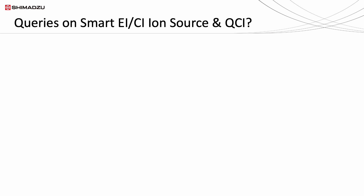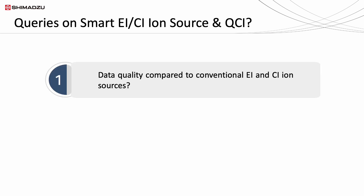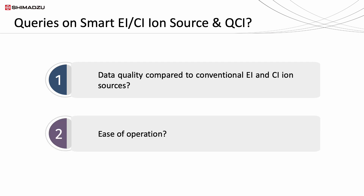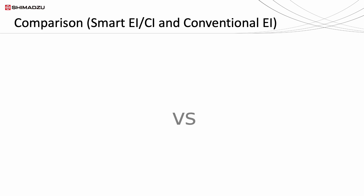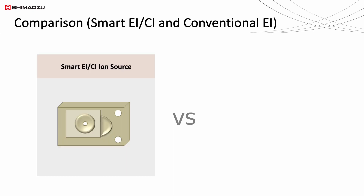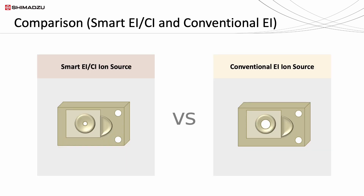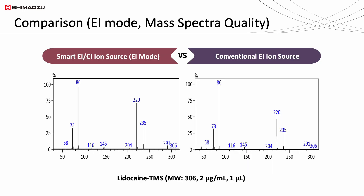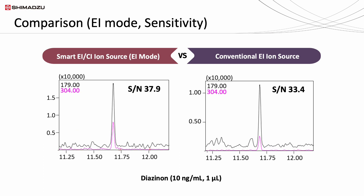Some GCMS users might have queries regarding the data quality and ease of operation of smart IS. Let us compare the data obtained from smart IS and a conventional EI ion source in EI acquisition mode. You may observe that the mass spectra of a local anesthetics derivative known as lidocaine TMS are similar in both ion sources. In addition, the sensitivity of the peaks and the mass chromatograms of diazinon are comparable in both ion sources, and even better in smart IS.